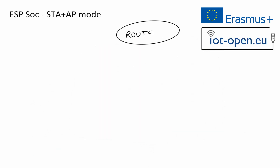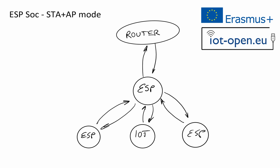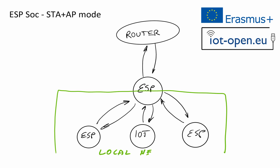The third mode combines the features of the two previous ones. In that configuration, the ESP system-on-chip uses station mode and access point mode simultaneously, and acts for other devices as a gateway or repeater. Client devices work in the ESP system-on-chip's local network while the ESP itself is connected to an external network.